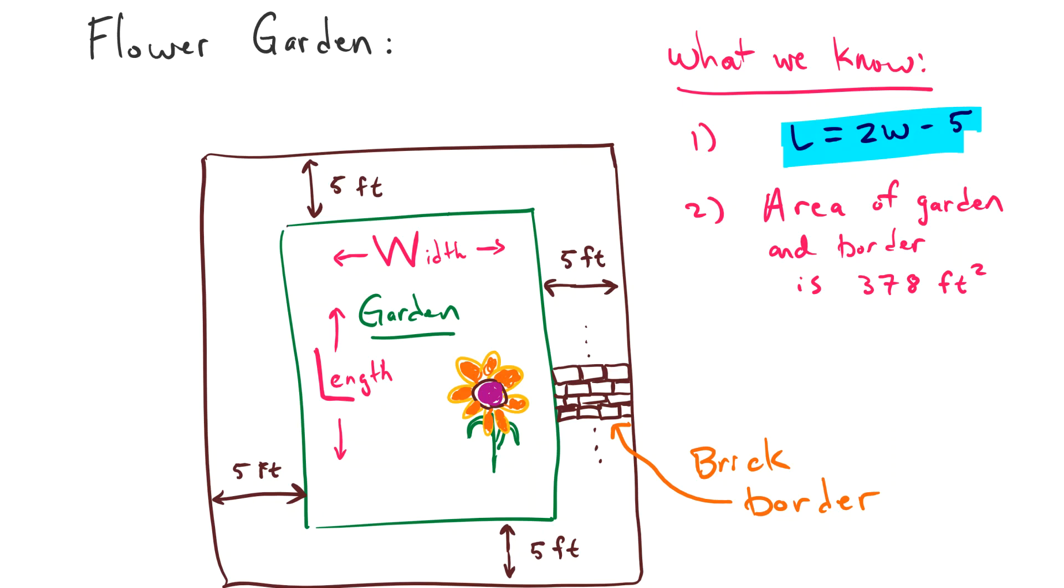One more piece of information we're given is that the area of the garden and the border, meaning all of this area, is 378 feet squared.